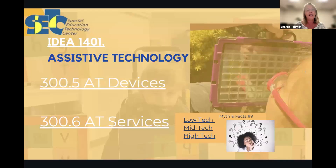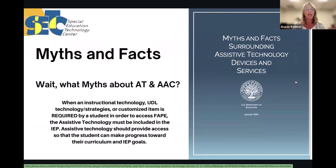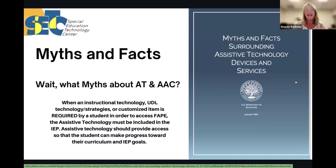Assistive technology is in IDEA. If you need to reference that for AT devices and services, which this document has been built on, I encourage you to go through that. Here is the document. Why do we have instructional technology and UDL, customized items? When they become required in order for a student to make progress towards their general education curriculum and towards their IEP goals, then it must be included within their IEP — in order for them to access FAPE, our free and appropriate public education.